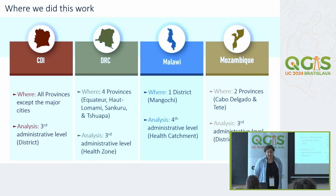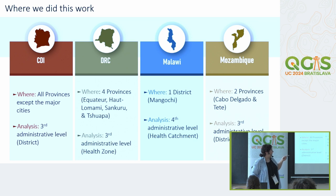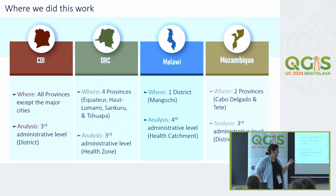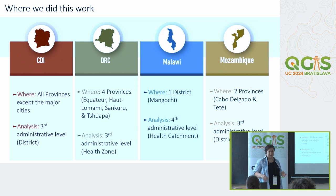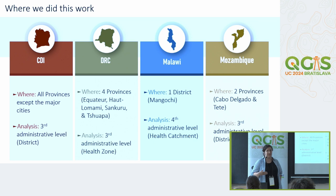We did this work in four countries: Côte d'Ivoire (CDI), Democratic Republic of Congo (DRC), Malawi, and Mozambique. In CDI, we covered all provinces except the two major cities, at the third administrative level. In DRC, we covered four provinces at the third administrative level, called the Health Zone. In Malawi, we covered one district at the fourth administrative level, which is the health catchment. In Mozambique, it was two provinces at the third administrative level, which is the district.